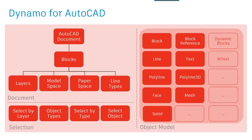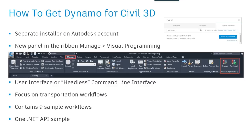For clarification: Dynamo for Civil 3D is available for Civil 3D 2020 only — not 2019 or previous versions, and as far as we know there are no plans for making it available for earlier versions. However, if you have access to a Revit license, for many of the Civil 3D workflows we're going to see today you can leverage Civil Connection, which works with versions from 2017 to 2019.